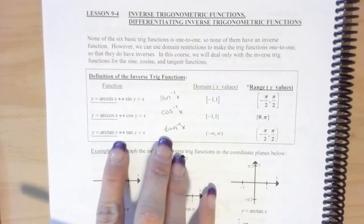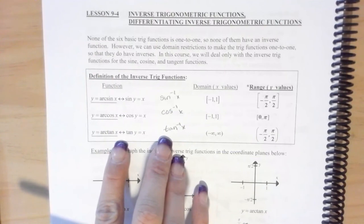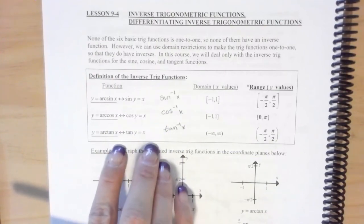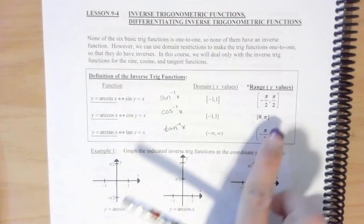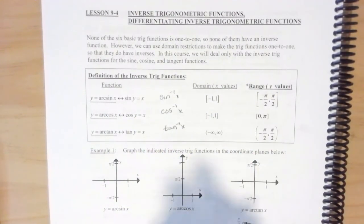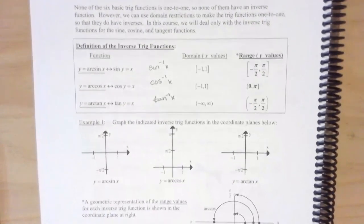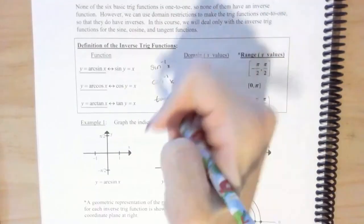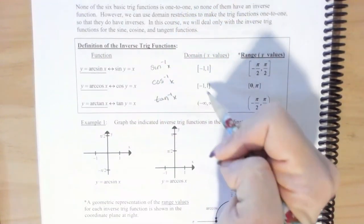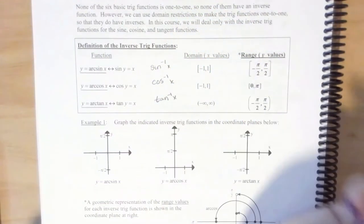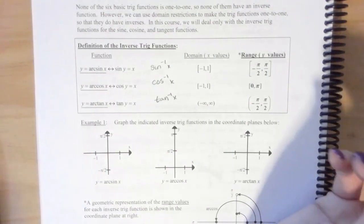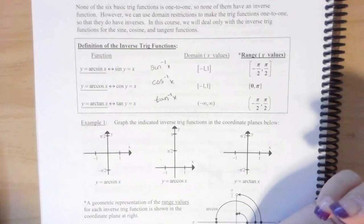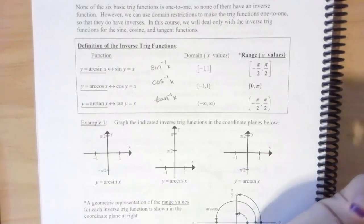When we do the inverse, we want it to be a function. Since it's a function, we need to restrict the domain, which restricts the range — the values of y. If we didn't restrict it, we wouldn't have a function anymore. Think of a sine graph — it's our snake shape, and if we did the horizontal line test it wouldn't pass, so that's why we have to restrict it.